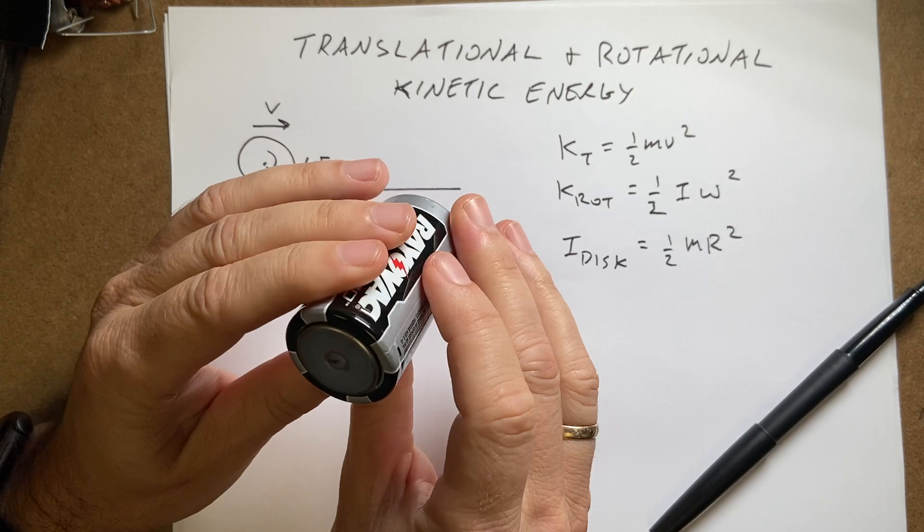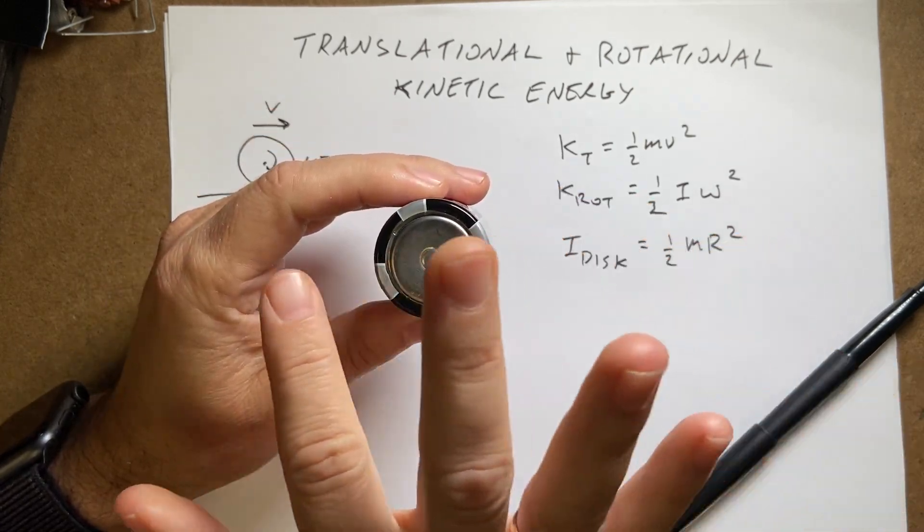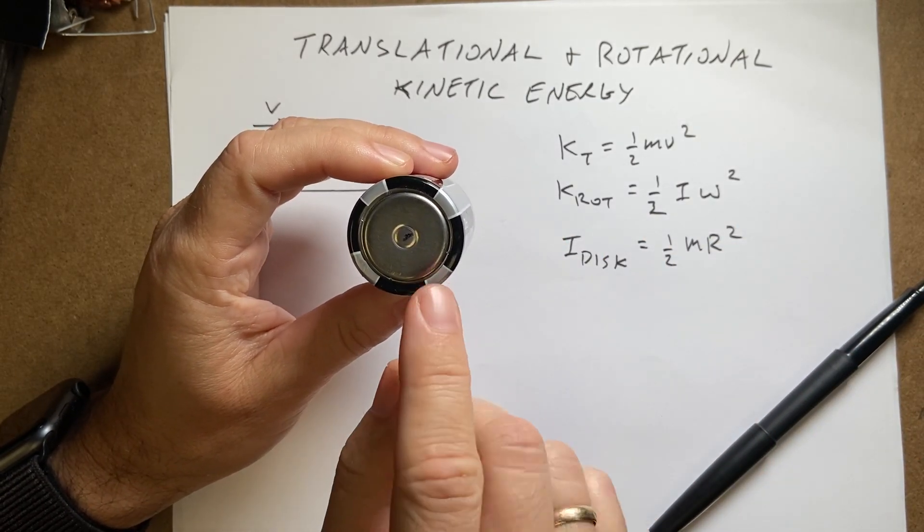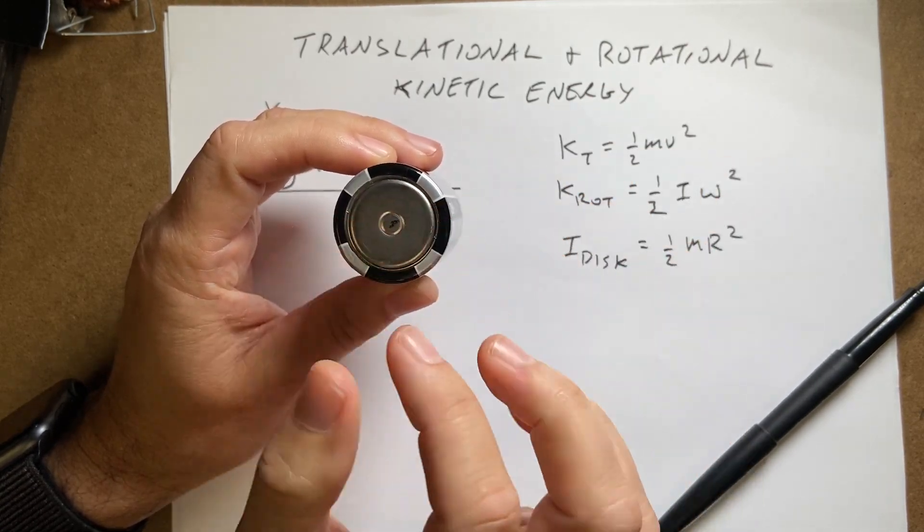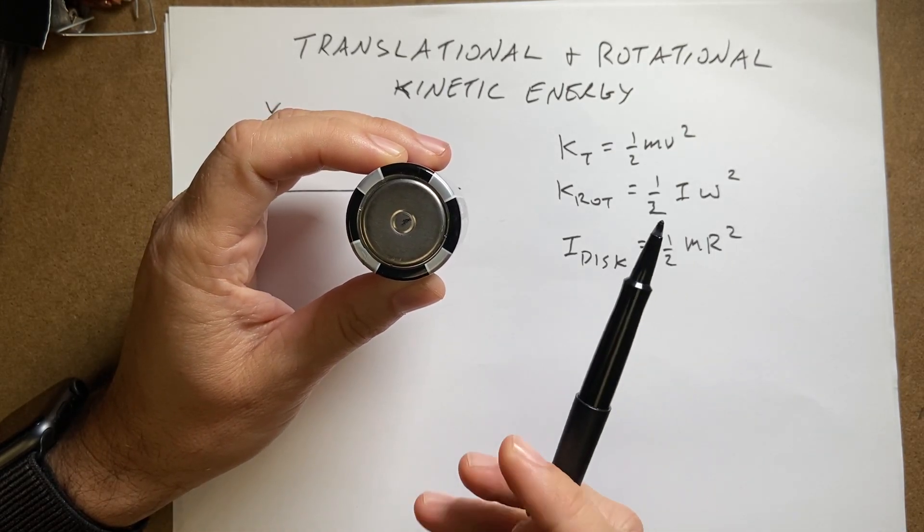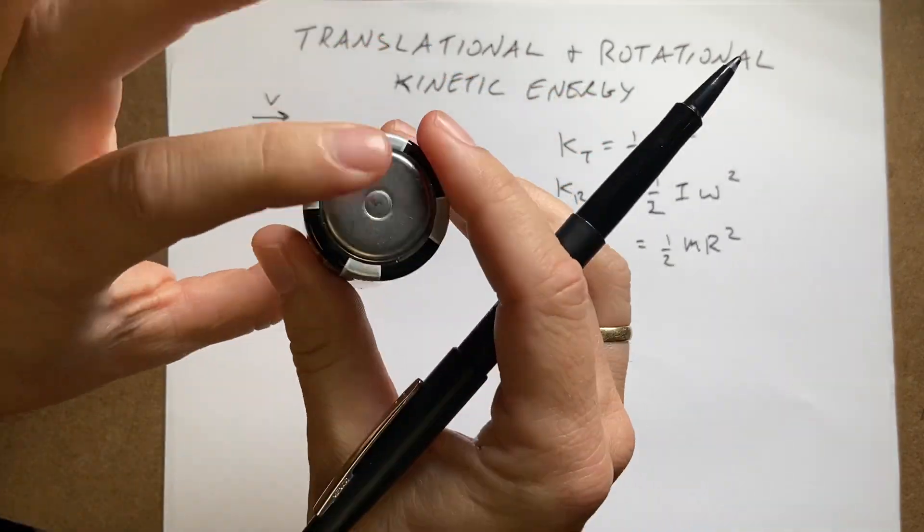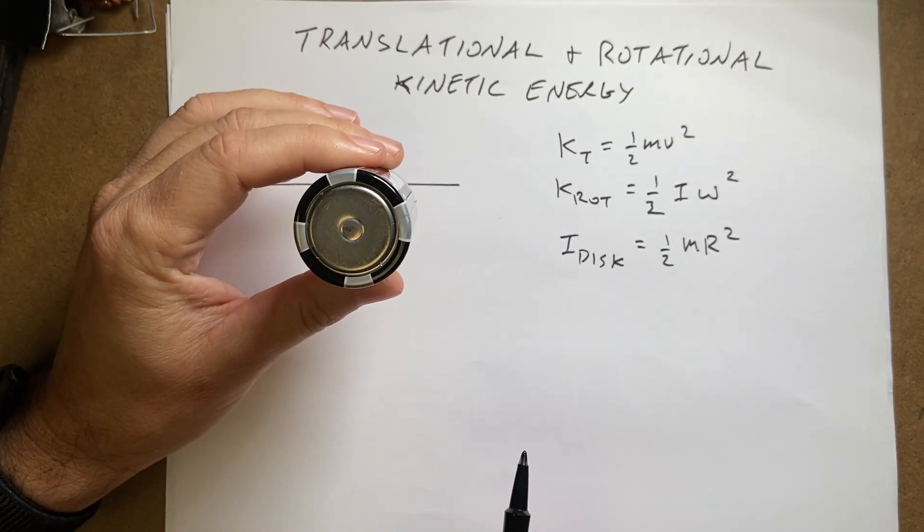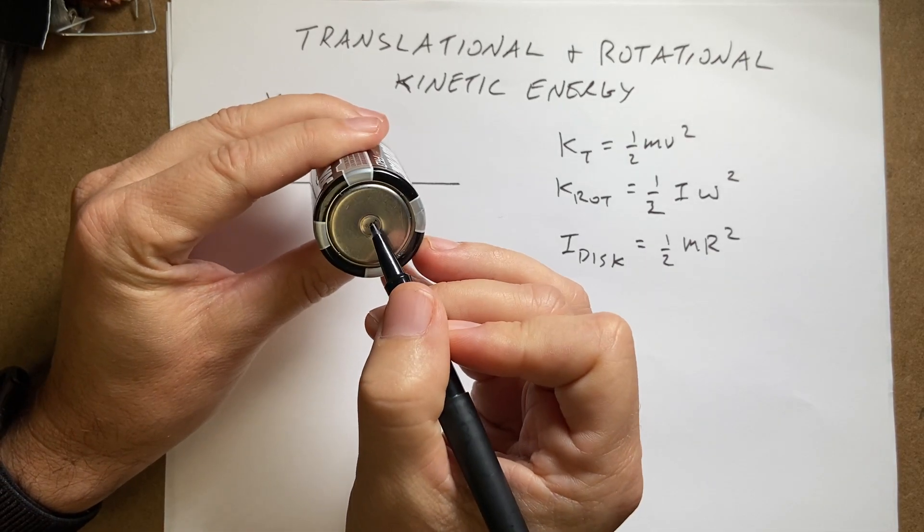The rotational kinetic energy depends on two things. It depends on how fast it's rotating and the rotational mass. So the rotational mass we call the moment of inertia, and it depends on both the mass of the object and how that mass is distributed about the axis of rotation. So in this case, if I'm rotating about the center for a disk, which is a disk, it's a really thick disk but it is a disk. For a disk rotating about the axis going through the center, the moment of inertia is one half mass times the radius squared. So we need the radius right here and the mass.